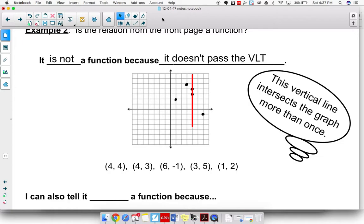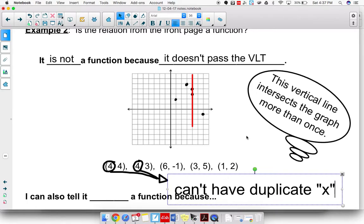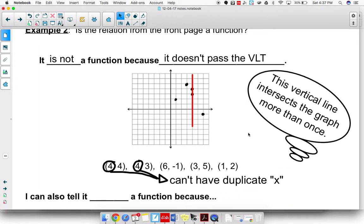Now let's just say you're looking at a relation and you didn't know, you didn't feel like graphing it out. Well, I always look at my inputs. The inputs are my X values. If I have an X value that gets repeated, like this case here, this can't repeat, can't have a duplicate X value. And the reason is that would mean that an input of 4 would produce two different outputs.